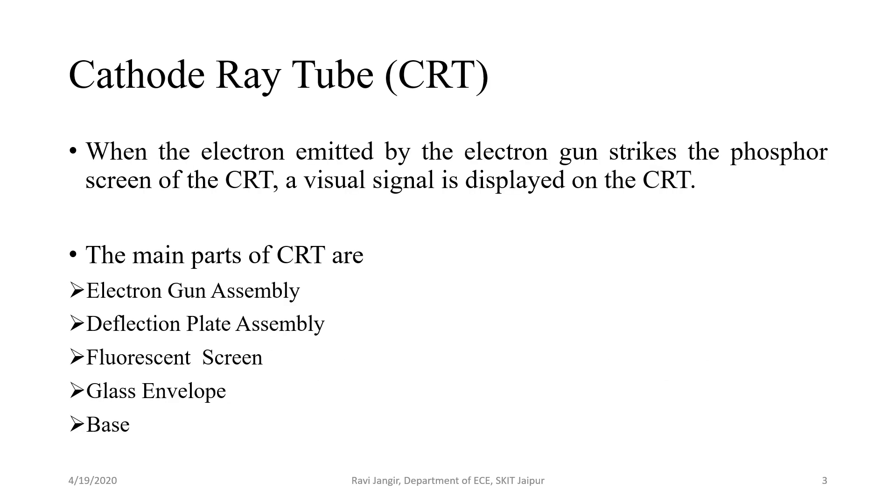As I discussed earlier, CRT is a display device which is used to observe and analyze different analog and digital signals. When the electron emitted by the electron gun strikes the phosphor screen of the CRT, a visual signal is displayed on the CRT. And this signal or display is generated with the help of five different parts: Electron gun assembly, deflection plate assembly, fluorescent screen, glass envelope and base. So, let us discuss each and every part in detail.